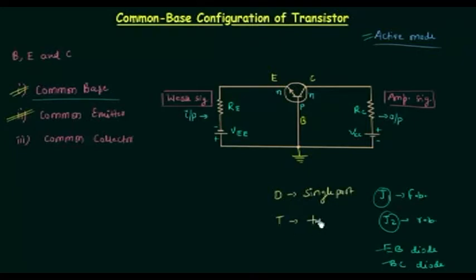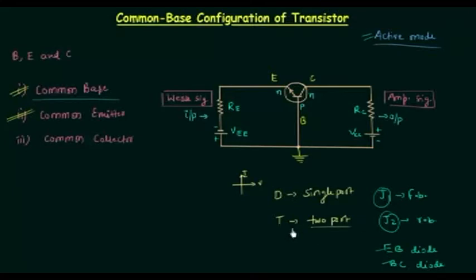I will call this reverse biasing potential VCC. If I compare diode and transistor: a diode is a single port device and a transistor is a two port device. In case of a diode we have simple V-I characteristics, but in case of two port devices like transistor we have input and output characteristics. In case of input characteristics we have a plot between the input current and the input voltage.